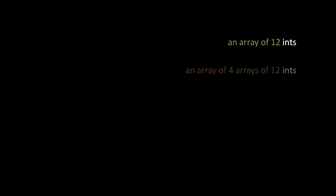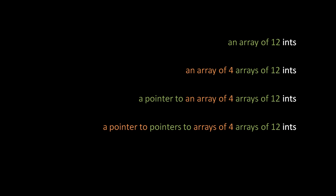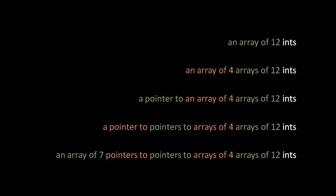Here's a more elaborate example of a complex type. Because there exists in C an int type, we can create arrays of int — for example, an array of 12 ints. And because that's its own type, we can create an array of that type: an array of 4 arrays of 12 ints. And because that's its own type, we can create a pointer to it: a pointer to an array of 4 arrays of 12 ints. And from that, a pointer to pointers to arrays of 4 arrays of 12 ints, and finally an array of 7 pointers to pointers to arrays of 4 arrays of 12 ints.